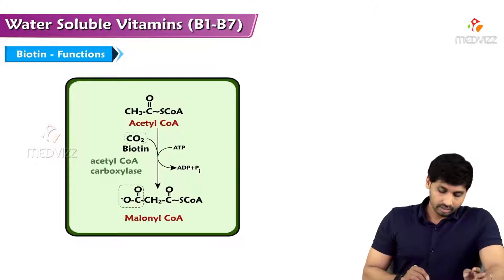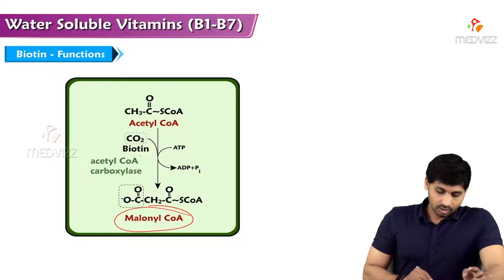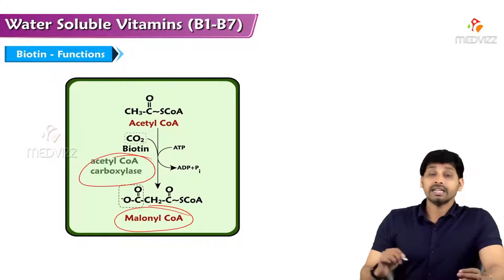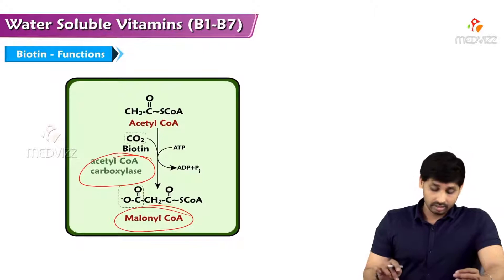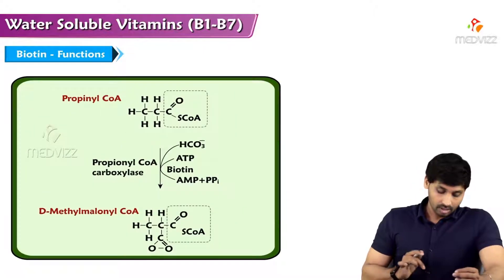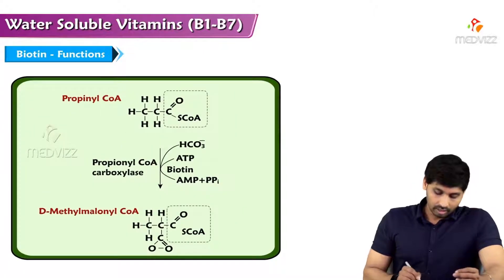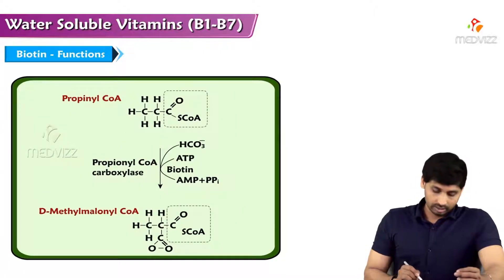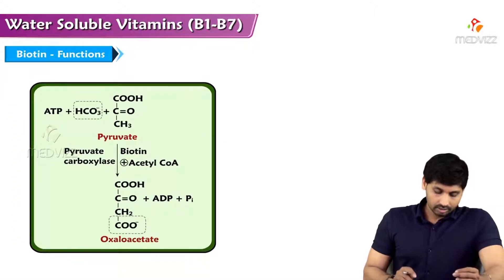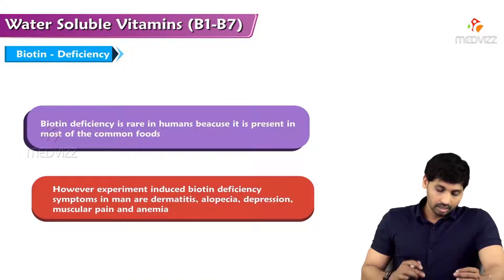You can see here: acetyl-CoA to malonyl-CoA requires acetyl-CoA carboxylase in fatty acid synthesis; propionyl-CoA to methylmalonyl-CoA is involved in gluconeogenesis; and pyruvate to oxaloacetate is also a gluconeogenesis reaction.